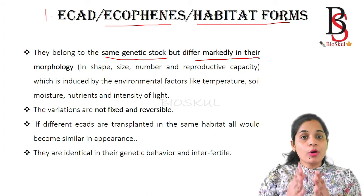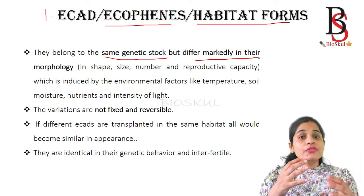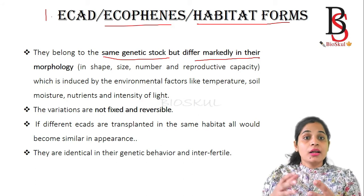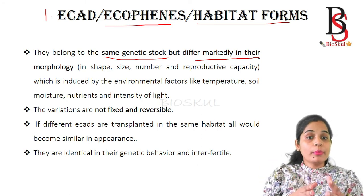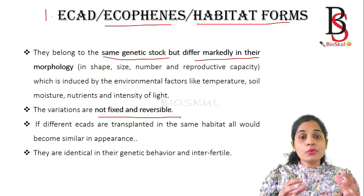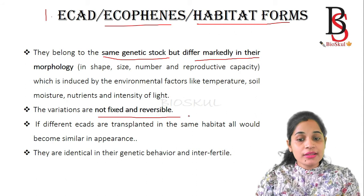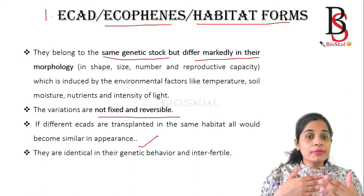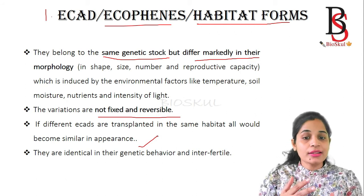Consider the same species of plant present in different environmental conditions. They get different environmental factors that lead to change in their morphology. For example, the same plant in one environment gets a large number of leaves whereas in another environment it has few leaves. The size of fruits also differs from one environment to another. But this type of change in morphology is not fixed — it is reversible. If we plant different Ecarths in a similar type of environmental condition, they will appear similar. So Ecarths are genetically similar but differ phenotypically or morphologically due to environmental conditions, and that change is reversible.